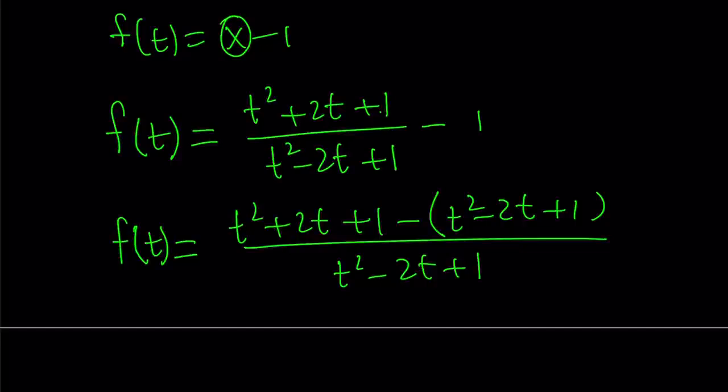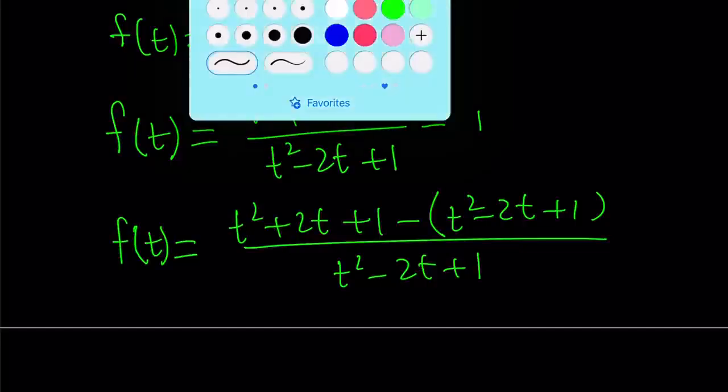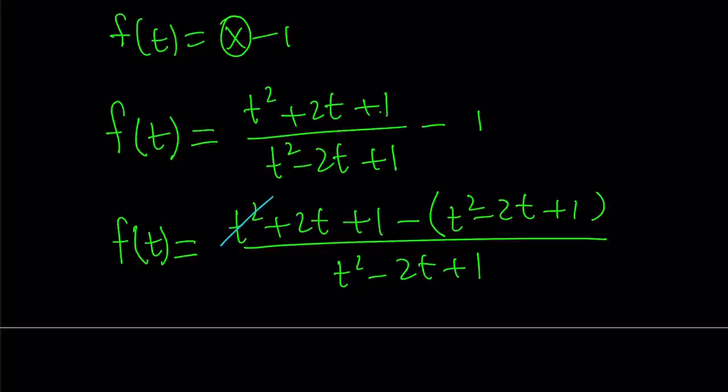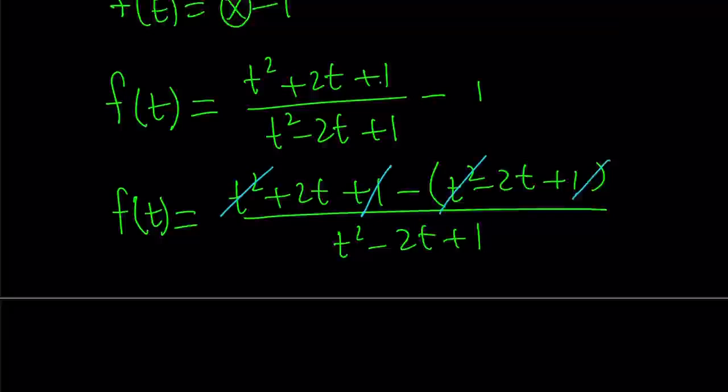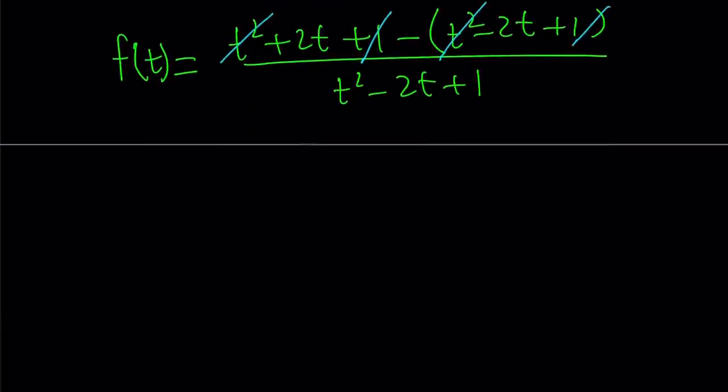Now let's make a common denominator by subtracting t squared minus 2t plus 1 from t squared plus 2t plus 1. So it's going to look like t squared plus 2t plus 1 minus t squared minus 2t plus 1 in parentheses, divided by t squared minus 2t plus 1. Let's simplify the numerator. We can cross out t squared and 1. So we get 2t minus negative 2t, that's 4t, divided by t squared minus 2t plus 1.